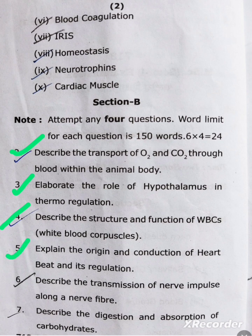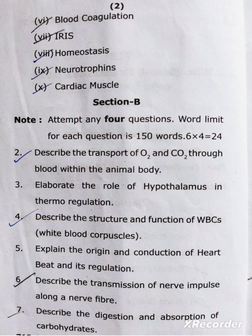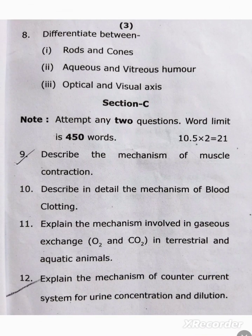Question number five: explain the origin and conduction of heartbeat and its regulation. Question number six: describe the transmission of nerve impulse along a nerve fiber. Question number seven: describe the digestion and absorption of carbohydrates. Question number eight: differentiate between rods and cones, aqueous and vitreous humor, optical and visual axis.